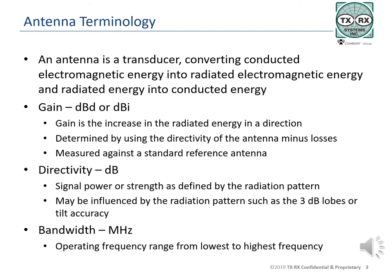An antenna may have very good directivity, but if it has high losses, its gain will be lower. If the energy from the antenna goes in all directions equally, the antenna is termed a unity gain antenna. Simple gain is how the antenna differs from a unity gain antenna.